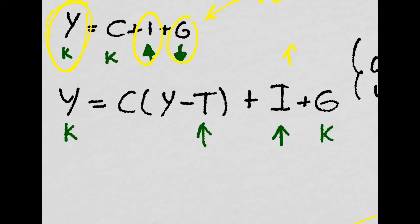Or, if we increase taxes, then this is constant and this has to be constant. So the increase in I has to be equal to the increase in taxes.